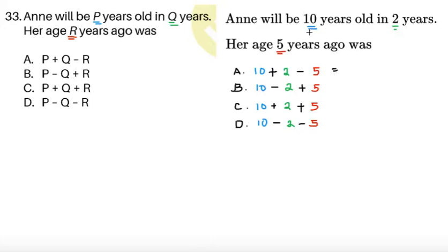So for example, choice A, if I let P equals 10, Q equals 2, and R equals 5, I will be getting 7 as P plus Q minus R. So that's choice A. For choice B, P minus Q plus R, this is going to give me 13. For choice C, P plus Q plus R, this gives me 17. And then for P minus Q minus R, this gives me 3.